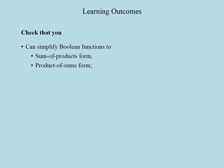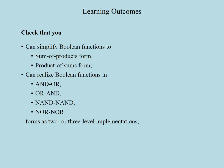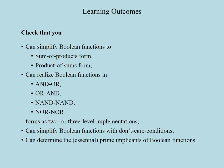Now it's time to check your learning outcomes: that you can simplify boolean functions to sum of products form and product of sums form; that you can realize boolean functions in AND-OR, OR-AND, NAND-NAND, and NOR-NOR forms as two or three-level implementations; that you can simplify boolean functions with don't-care conditions; and that you can determine the prime implicants and essential prime implicants of boolean functions.